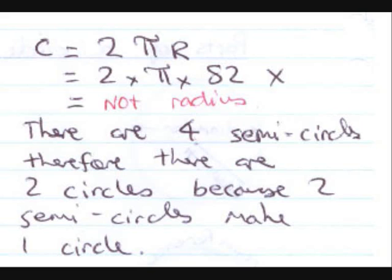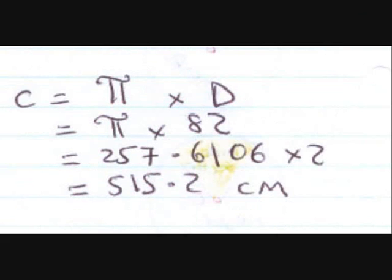But also, there are four semicircles. Therefore, there are two circles, because two semicircles make up one circle. Let's have a go. The circumference of one would equal pi times d, so pi times 82, which equals 257.6106. And we times it by two, because there are two full circles, which gives us the answer, which is 515.2 millimetres, not centimetres. You've got to be really careful. Good luck.